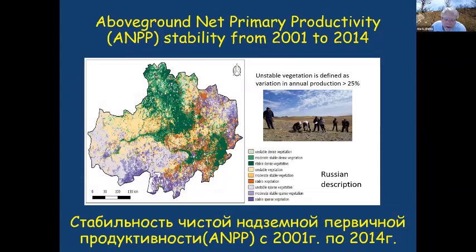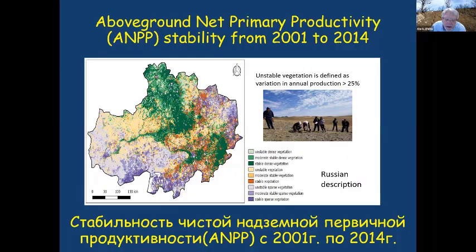The core and central element we're trying to convey in all of these presentations is that we first need to establish what is the above ground net primary productivity — that is, the amount of standing biomass produced above ground each year. That serves as the forage resource or feed for livestock during the growing season.